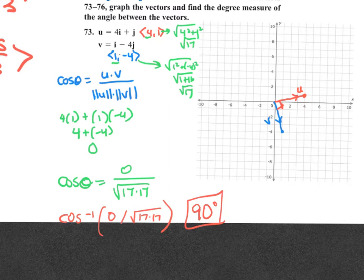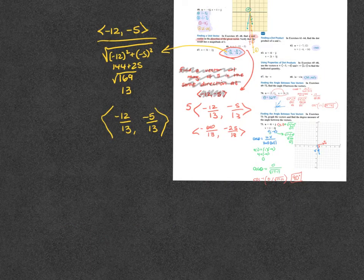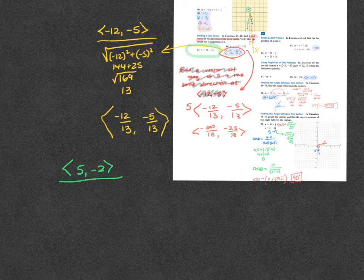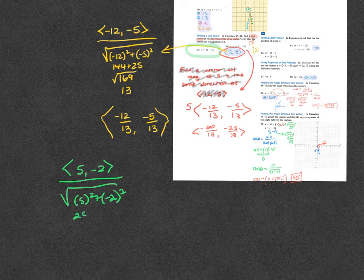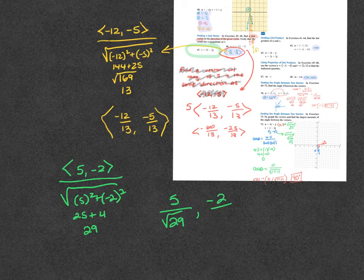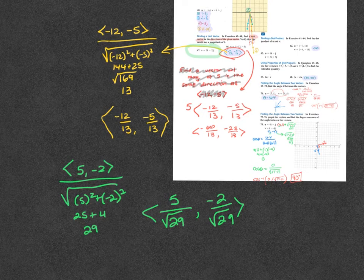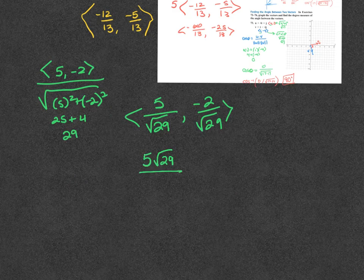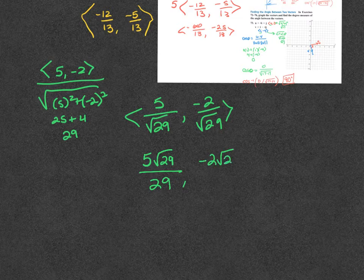The directions say find a unit vector in the same direction as the one given. So for number 47, the unit vector: do the component form 5, negative 2 over the magnitude, which is the square root of 5 squared plus negative 2 squared — that's 25 plus 4, which is 29. So I get 5 over square root of 29 and negative 2 over square root of 29, which has to get rationalized, giving 5 root 29 over 29 and negative 2 root 29 over 29.